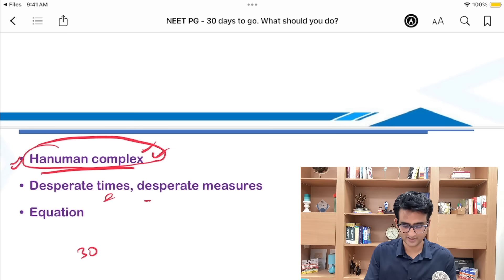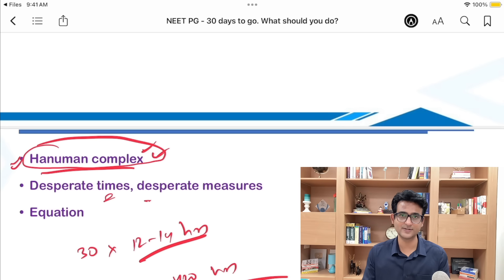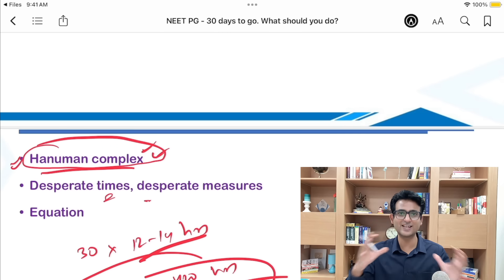We still have 30 days left. If you can clock between 12 to 14 hours a day, we are looking at something like 360 to 420 hours. That's a huge amount of time. Just to give you an idea, the quick revision videos, the rapid revision videos are around 180 hours. The BTR is around 100 hours or 90 hours. You can do these things 3 times or 4 times. Of course, it takes more time, but I am just giving you an example to tell you we have got significant time left.